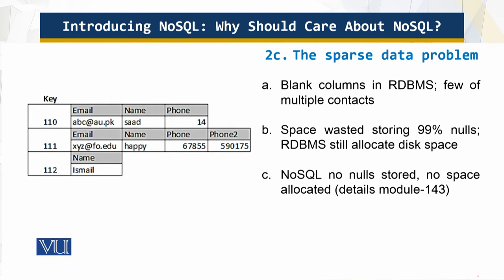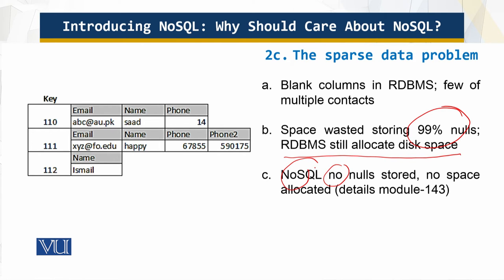Then there is the sparse data problem — blank columns in RDBMS. For example, people have few contacts, but the table may have multiple spaces allocated for contacts, so space is wasted storing 99% nulls. In RDBMS, disk space must be allocated. With NoSQL, no nulls are stored and no space is allocated.